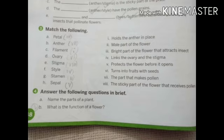Now number D: Ovary, matching with number 6 - Turns into fruits with seeds. Now number E: Stigma, matching with number 8 - The sticky part of the flower that receives pollen.